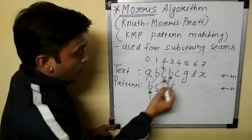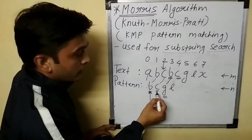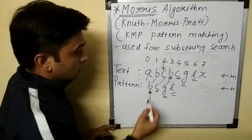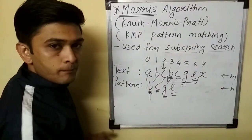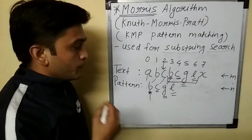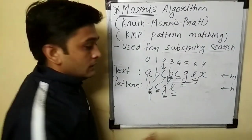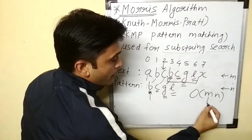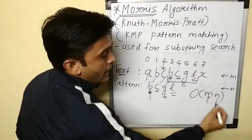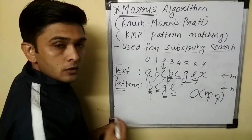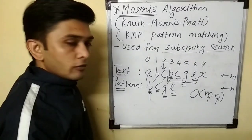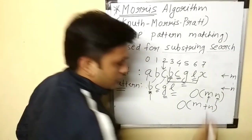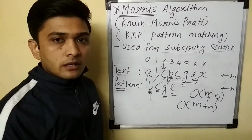Then B is matched with B, C with C, G with G, and L with L. So this is how we found the pattern B, C, G, L. This is the usual way pattern matching is done. The worst time complexity in this case is O(MN), where M is the length of the text and N is the length of the pattern. This is where KMP algorithm comes into picture — in KMP the time complexity is O(M + N).